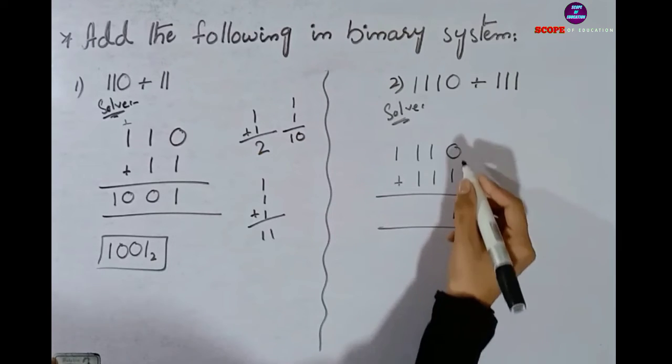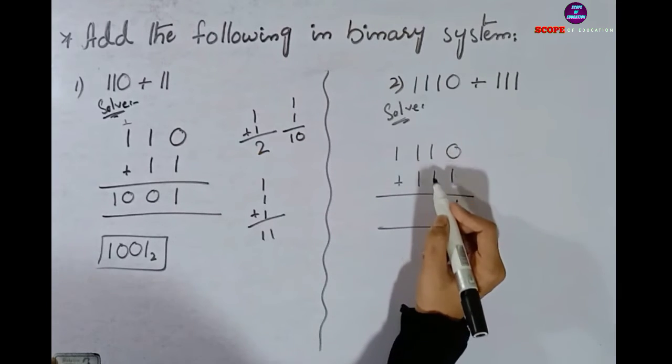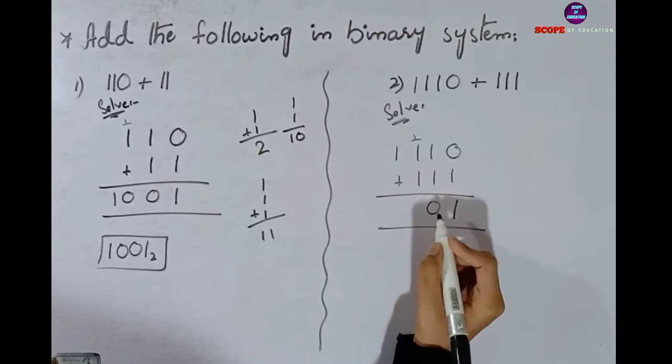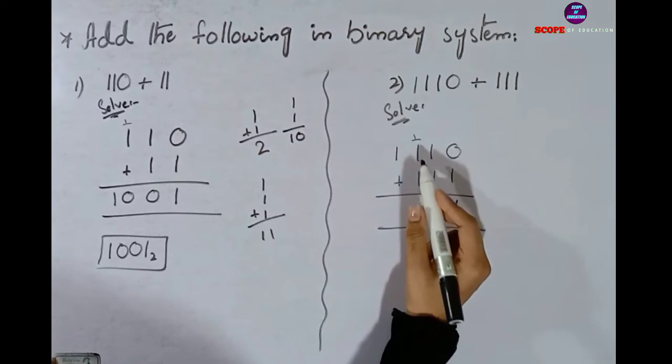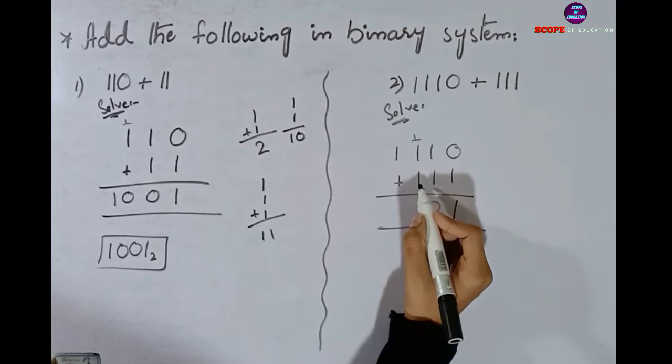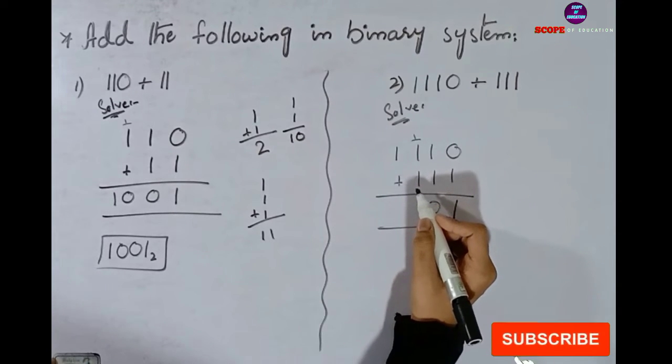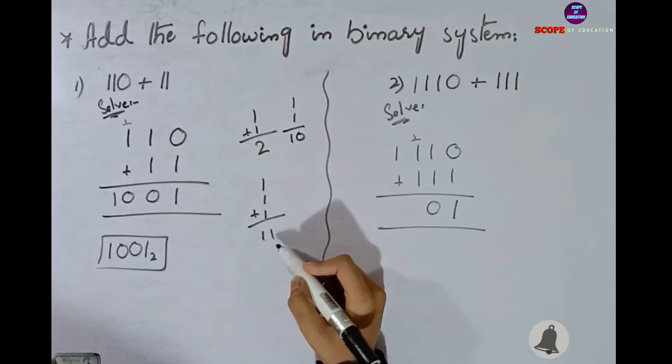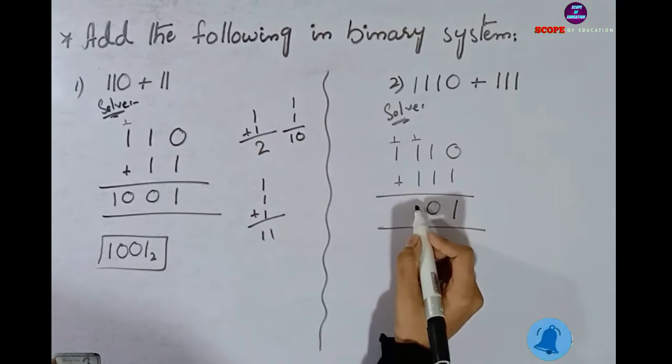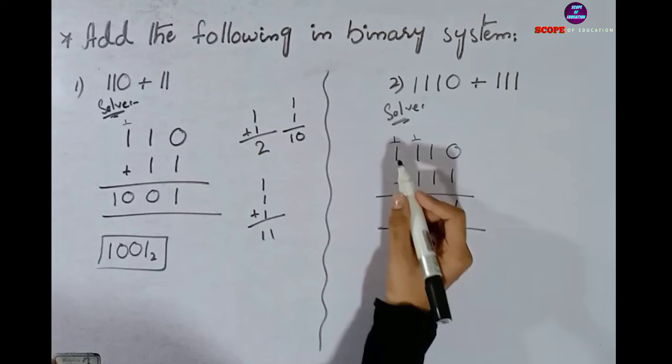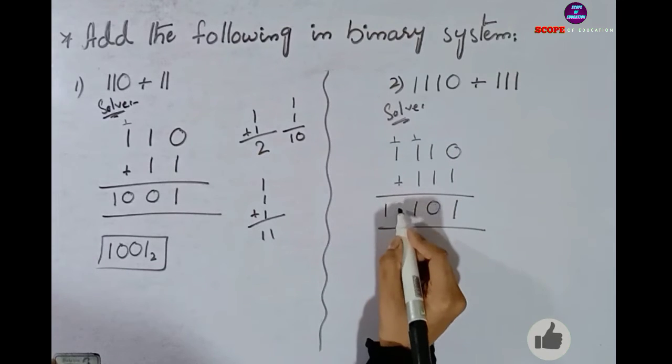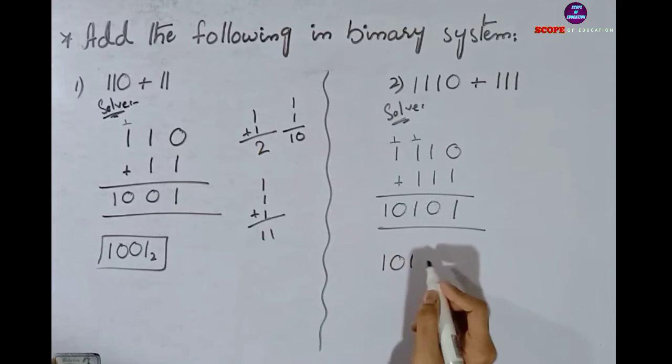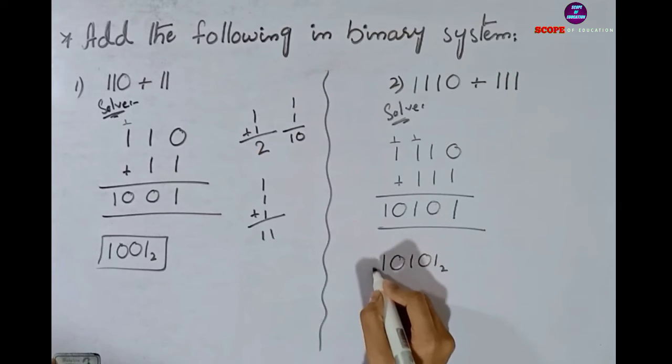Here also one will come as is because above is 0. Here two ones came, so two ones equal 10, one carry goes up, 0 comes down. Now we have triple one. We have to add triple one, so two ones equal 10. Now triple one equals 11, so one goes as carry and one comes down. And here double one came, so this becomes 10. We have figured out the second question's answer also, we have added it.